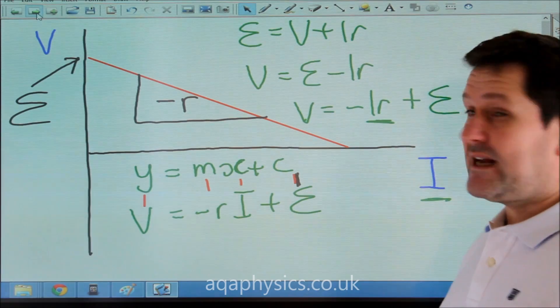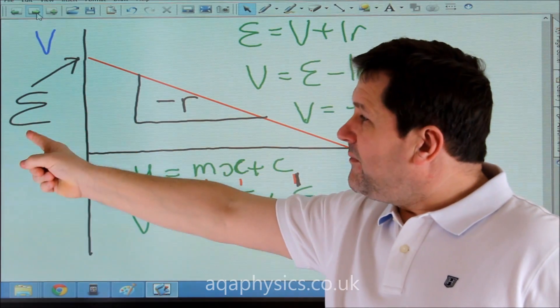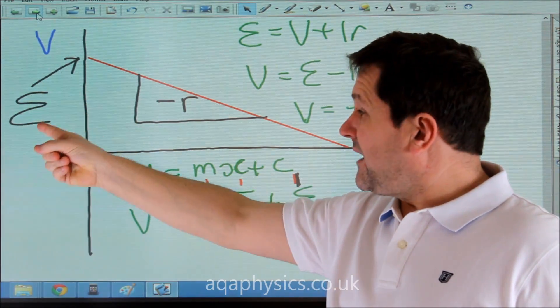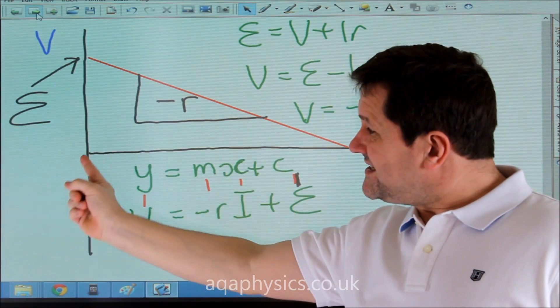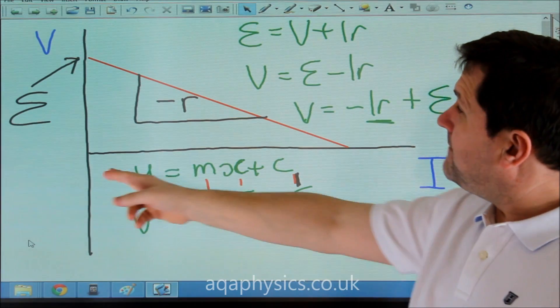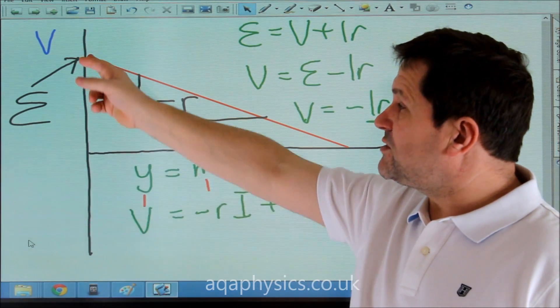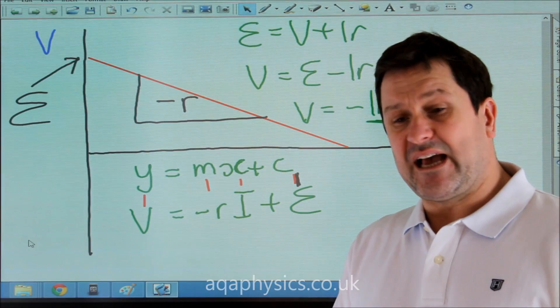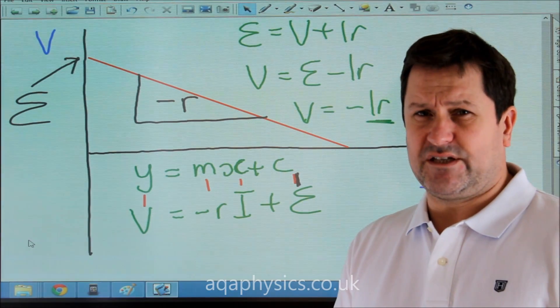It does make sense because it's obvious that this must be the EMF of the battery. Because when the current is zero, then you would have all the potential difference must be across the internal resistance of the battery, because the external resistor has no resistance.